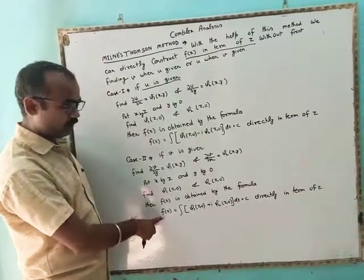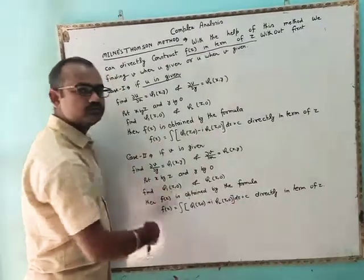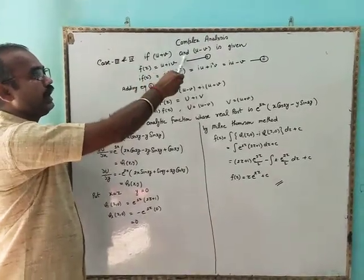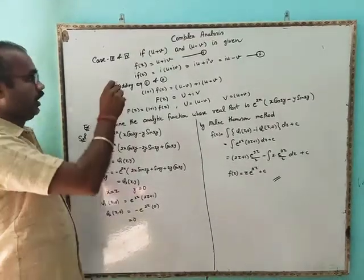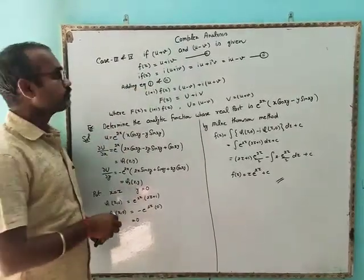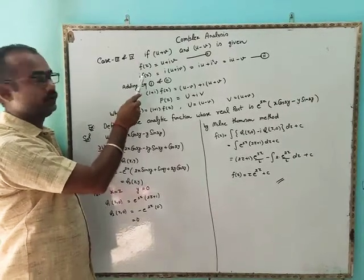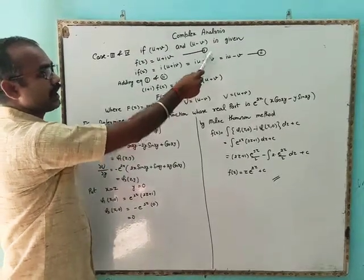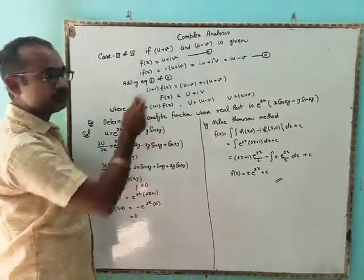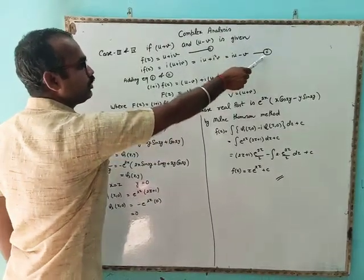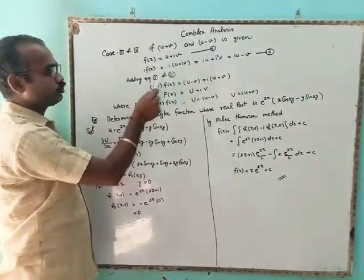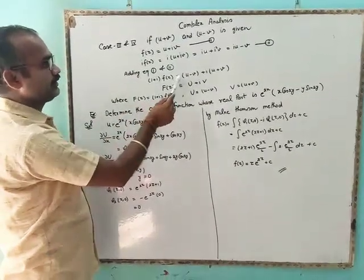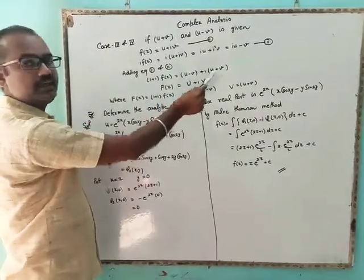For cases three and four, if u + v or u − v is given: we take f(z) = u + iv, then multiply both sides by i so i·f(z) = iu + i²v = iu − v. Now adding equation one and equation two, we get (1 + i)·f(z) = (u − v) + i(u + v). So if u + v is given, we treat it as the real part, and if u − v is given, as another combination.